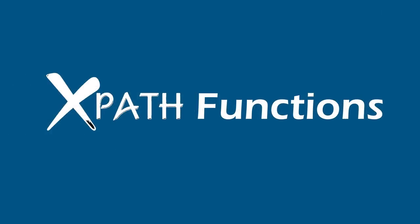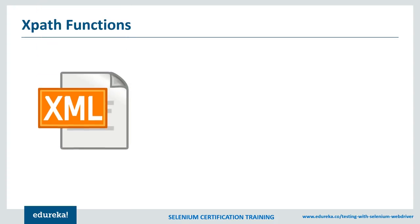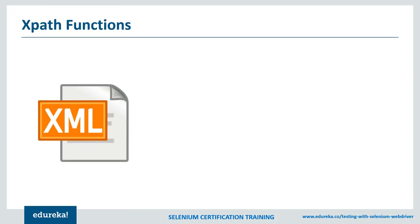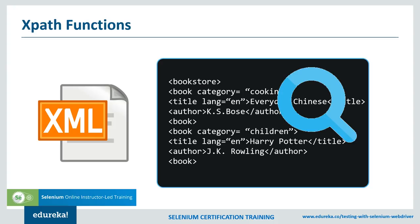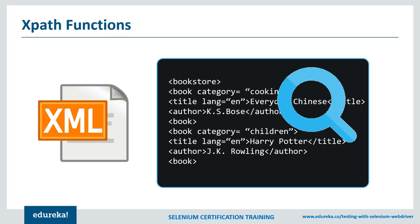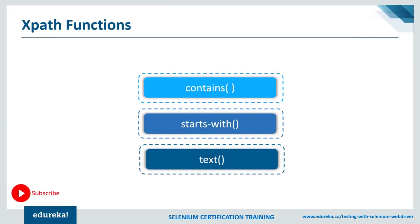Now let's move further and understand XPath functions. Automation using Selenium is a great experience — it provides many ways to identify an object or element on the web page. But sometimes we face problems identifying objects on a page that have the same attributes, like multiple checkboxes with the same name and ID, or more than one button having the same name and ID. In such cases there is no way to distinguish between those elements, and that's where XPath functions come into picture.